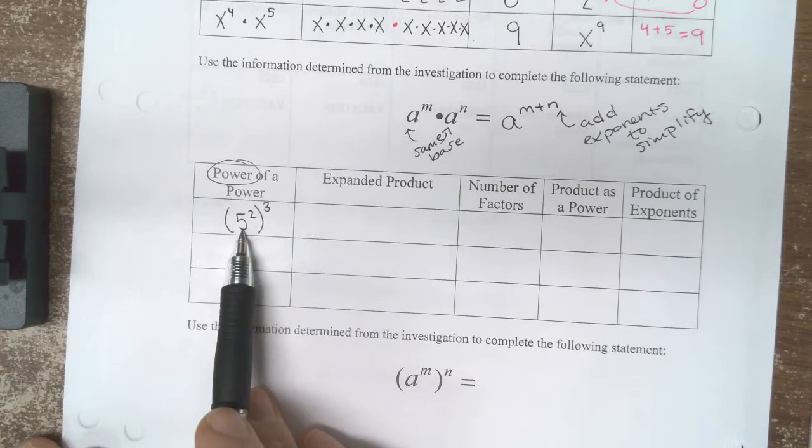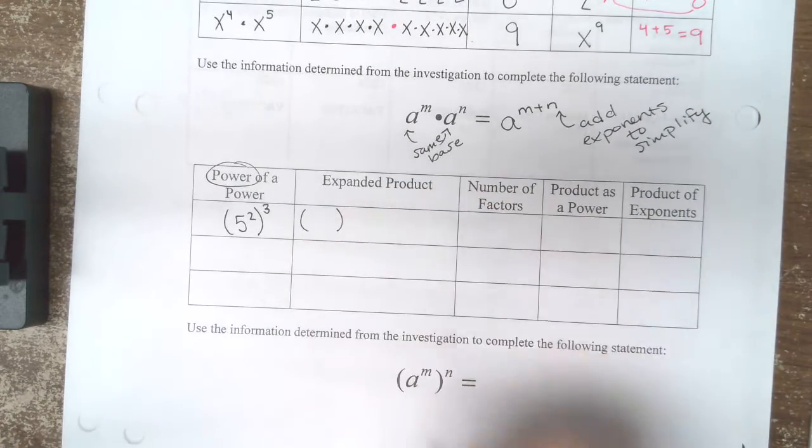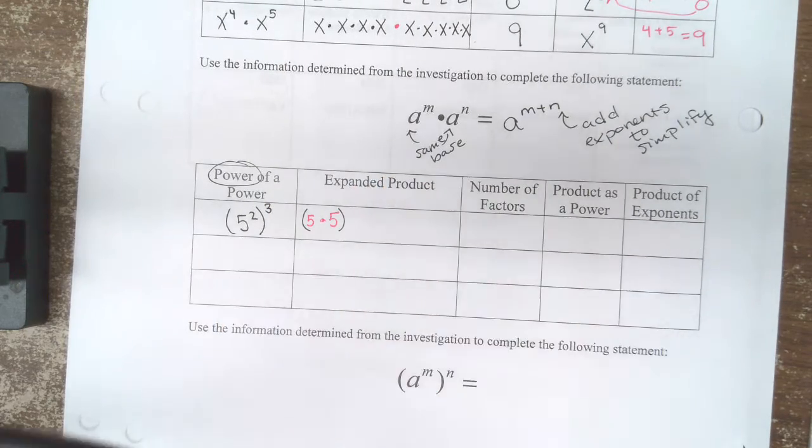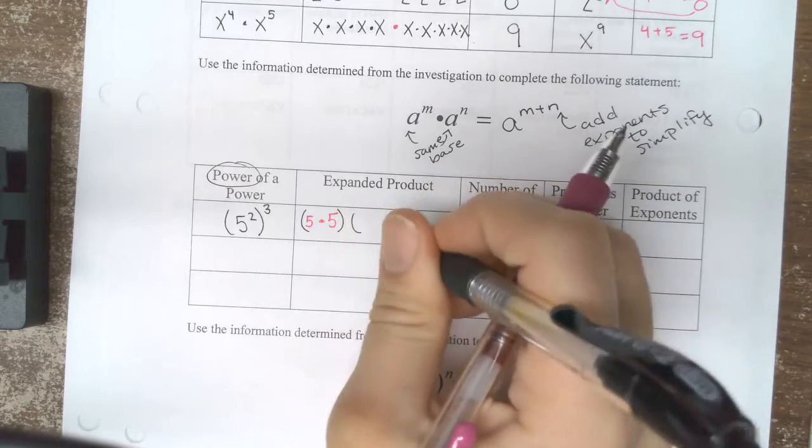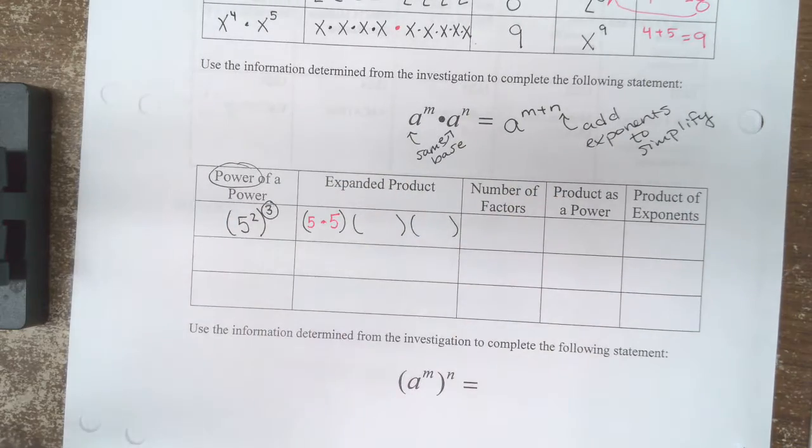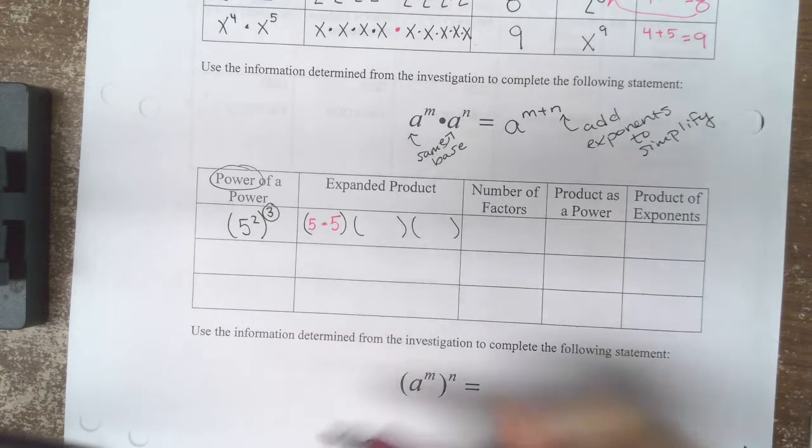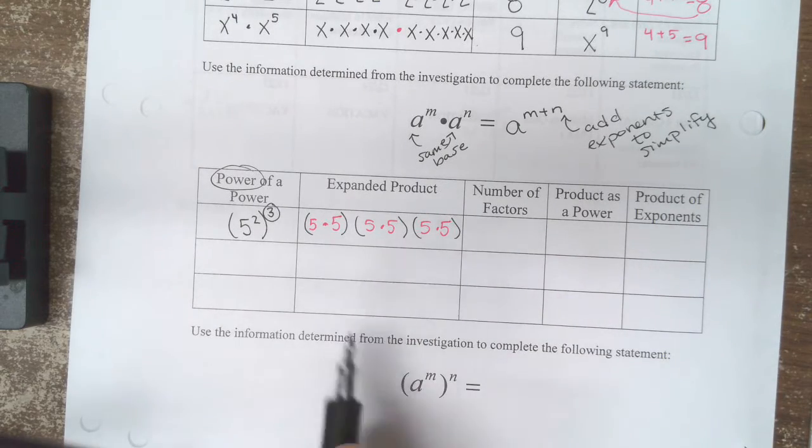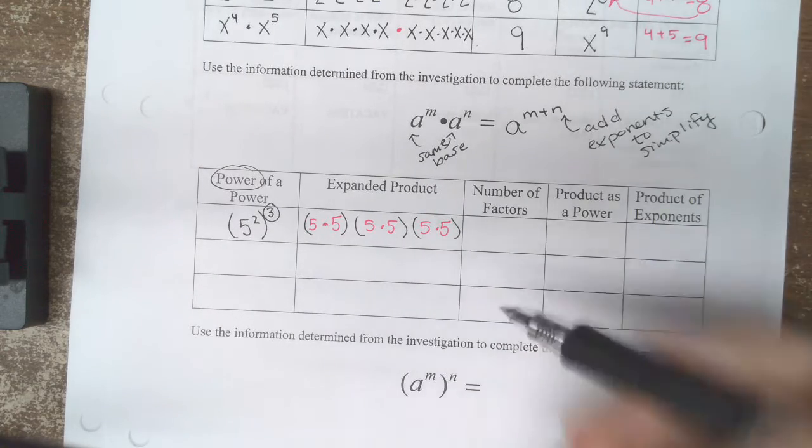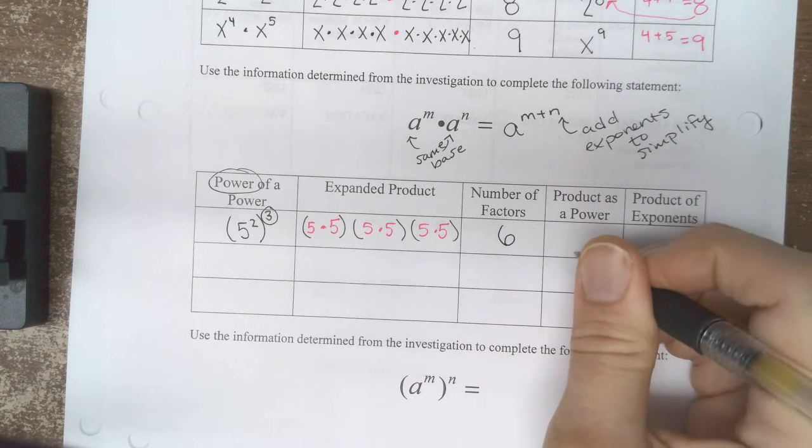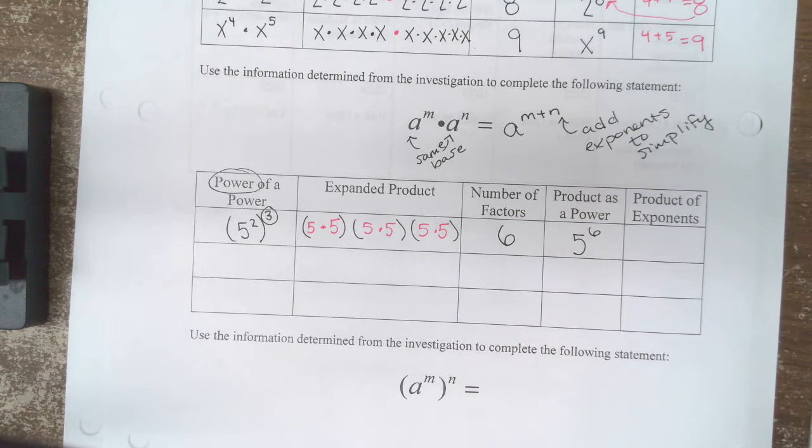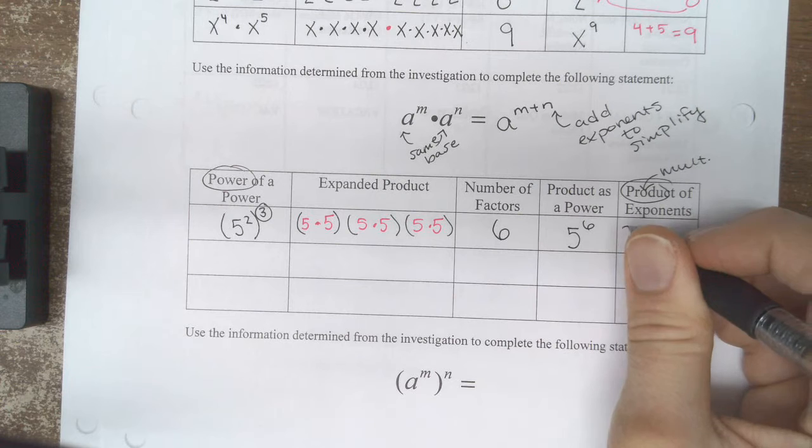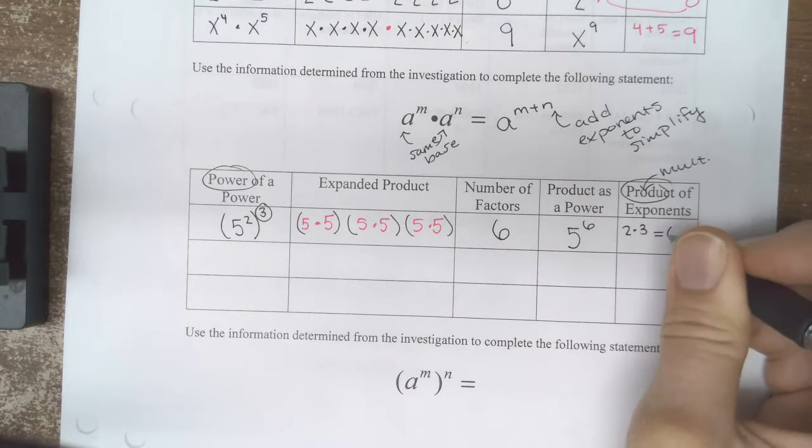Now inside this parenthesis, 5 squared means I have 5 times 5, but I have this parenthesis 3 times because of that exponent there. So I have 5 squared and I have it 3 times. Counting up the number of factors of 5 that I have here gives me 6 factors of 5, or I could write that as 5 to the 6th. The product, which means multiplying, if I multiplied my exponents here, 2 times 3 equals 6.